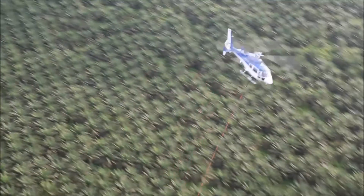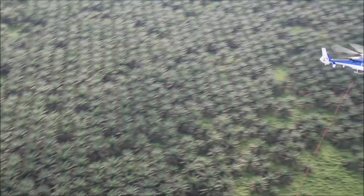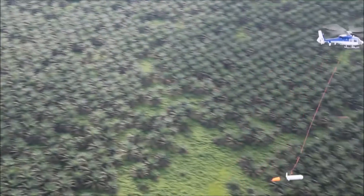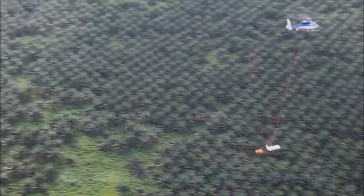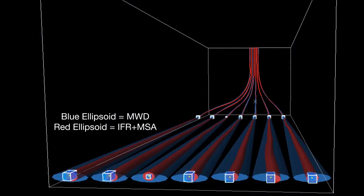IFR is also a prerequisite for MSA, multi-station analysis, which can provide further reduction of uncertainty ellipsoids by as much as approximately 60 percent.